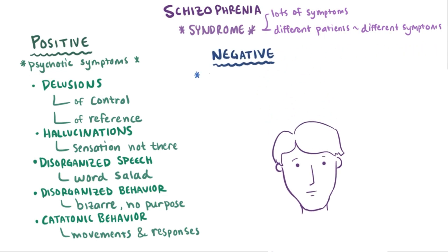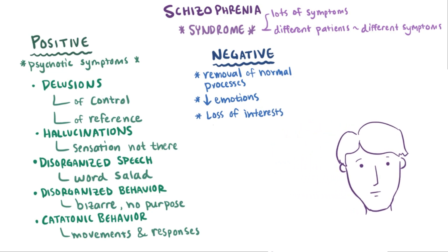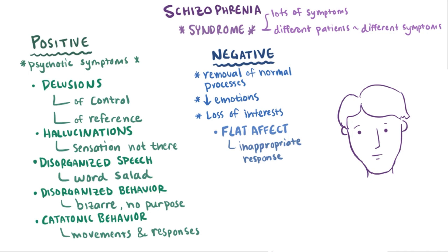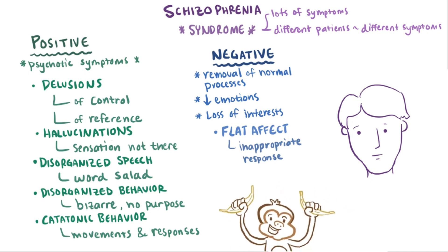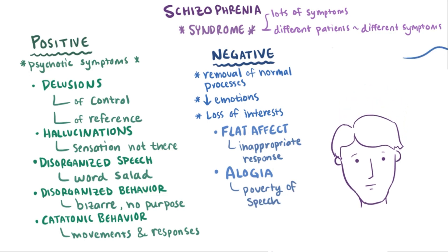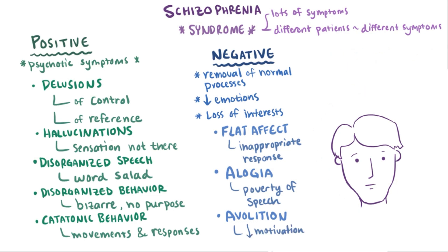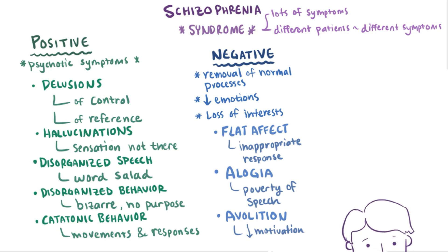Negative symptoms are like when there's a reduction or removal of normal processes, such as a decrease in emotions that they can express or a loss of interest in things they once found interesting. One type is called flat affect, where they don't respond with an emotion or reaction that would seem appropriate — like if they saw something very unexpected, like a small monkey playing in their living room, they might simply sit and watch idly as if nothing was happening. Another type is alogia, or poverty of speech, which is a lack of content in their speech. A third type is avolition, which is a decrease in motivation to complete certain goals, so someone might stay home for long periods of time without trying to reach out to friends or find work.